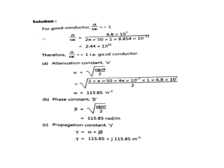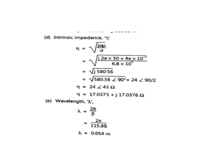Next, we calculate the phase constant beta. For a good conductor, beta is given by the same formula: under root of (omega mu sigma divided by 2), so beta is also equal to 115.85 rad per meter. The propagation constant gamma equals alpha plus j beta, giving gamma equal to 115.85 plus j 115.85 per meter.